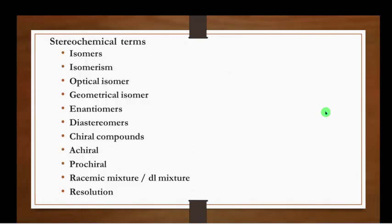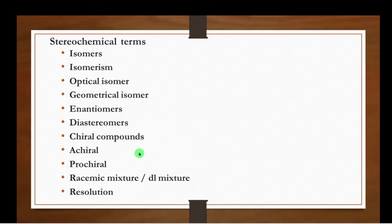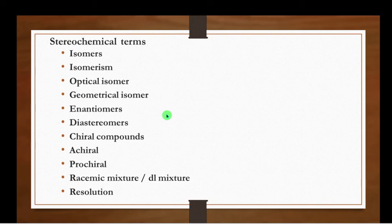Now we will see the terms involved in Stereochemistry: isomers and isomerism, optical isomers, geometrical isomers, enantiomers, diastereomers, chiral compounds, achiral compounds, prochiral compounds, racemic mixture or DL mixture, and resolution. In this video I have planned to cover up to enantiomers. In another video we will be able to see the other aspects of these terms.